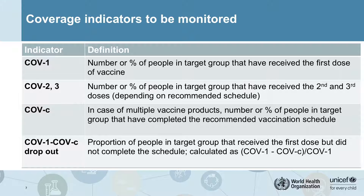The main indicator that will need to be measured is coverage, annotated as COV — not for coverage, but for COVID — plus the dose number. So we will talk about COV-1, COV-2, COV-3, depending on which dose in the schedule is being measured. There will be different vaccine products, all with different dose requirements. We also propose the annotation COV-C that compares the final dose in each schedule. We will also want to monitor dropout between the first dose and the final dose that completes a schedule, called the dropout between COV-1 and COV-C — the proportion of people who started on a first dose but didn't complete the required final dose.